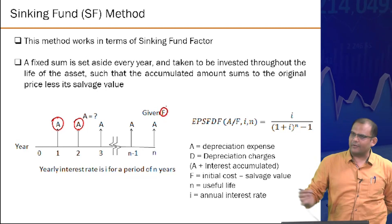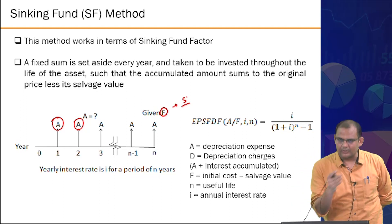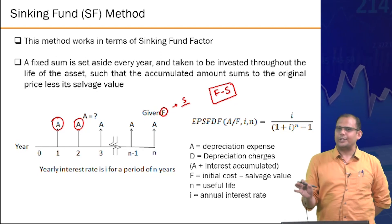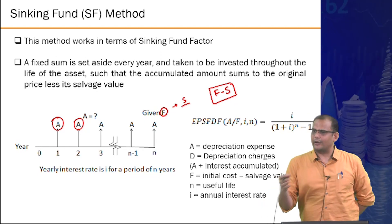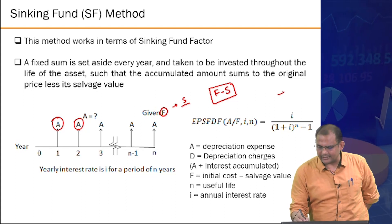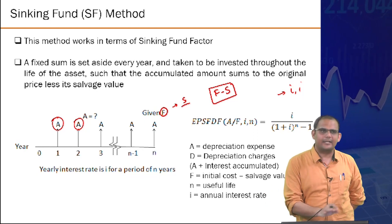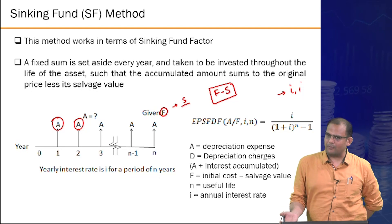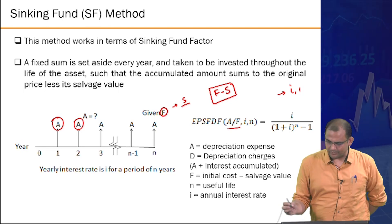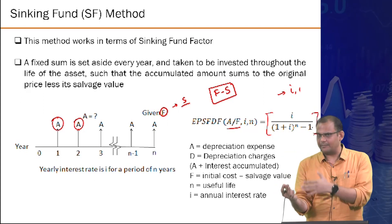If you know the required amount F at end of year N and the salvage value S, then F minus S is the total you need. The annual deposit A is calculated using the A/F formula at a given interest rate i. The actual depreciation each year is not just A, but A plus the interest accumulated by the A series deposited so far.